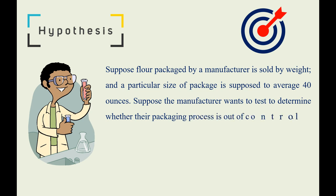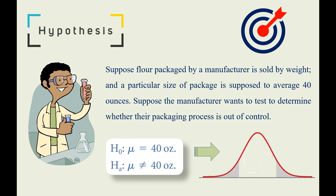Suppose the manufacturer wants to test to determine whether their packaging process is out of control. In this case, the null hypothesis and alternative hypothesis can be written as H0: μ equals 40 ounces and HA: μ is not equal to 40 ounces. This is a typical case of two-tailed test.